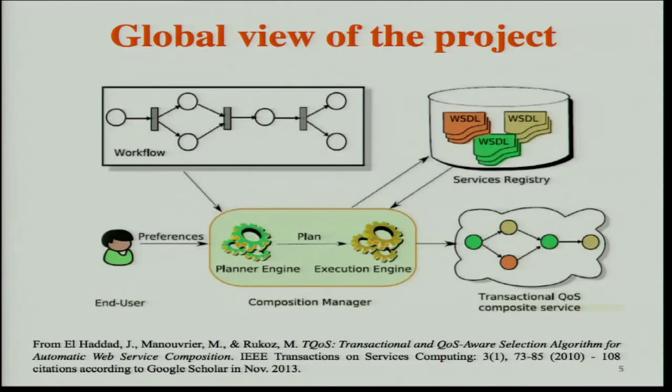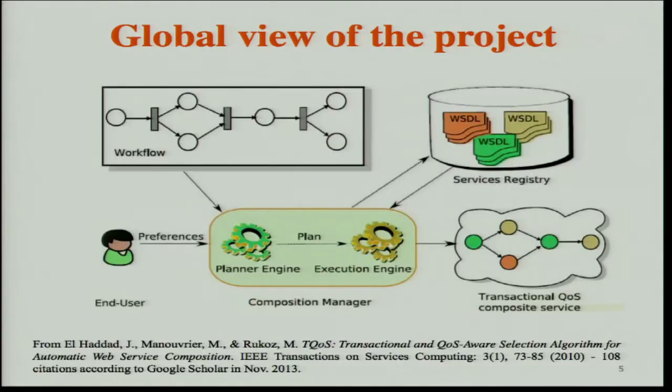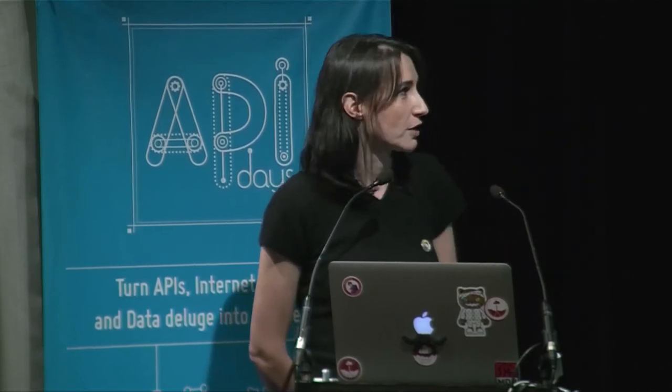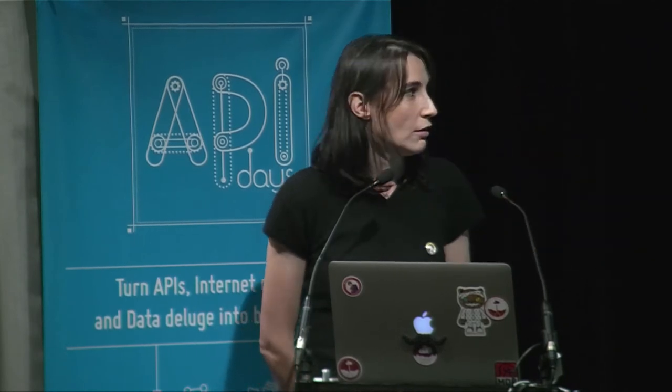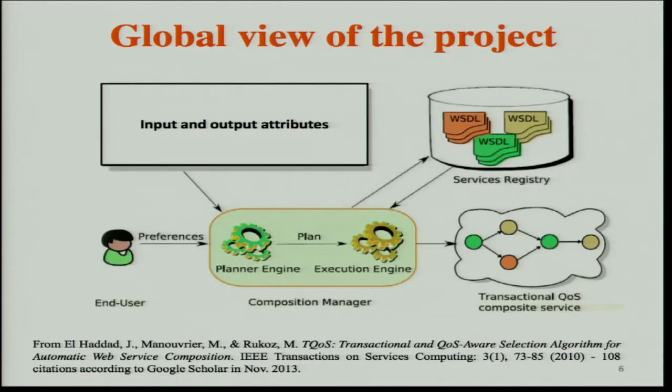To give you a global view of what we do: we have a user who asks a query, and we suppose we need to give him a combination of services to answer that query. He can ask his query in two different ways. He can give a workflow — a business process decomposed into activities — for example, a flight ticket and a hotel reservation. Or he can provide only input and output attributes, such as a name and keywords, wanting all conferences associated with that person dealing with those keywords. Using the service registry, which I will explain later, we try to automatically define a service composition that answers the query.